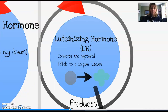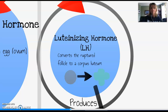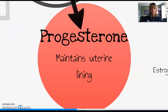Luteinizing hormone is the hormone from the anterior pituitary that converts a ruptured follicle — one that is now void of its oocyte — into the corpus luteum. It's the corpus luteum that produces progesterone, and this is the hormone that maintains the uterine lining, that maintains the endometrium should fertilization occur. We need to have a glycogen-rich environment to support that growing embryo, which will then become the growing fetus.